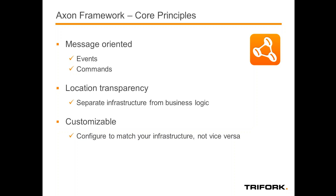We do that by separating your infrastructure from your business logic. The business logic components interact with each other in a location-transparent way, which means they don't care where the other components are located. They might be in the same JVM, they might be on different machines, they might be on different data centers around the world — the APIs don't change. And of course it's highly customizable, because we want to make sure that whatever infrastructure you have or need, you can configure Axon framework to work with it.